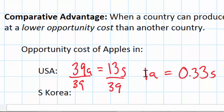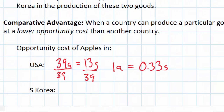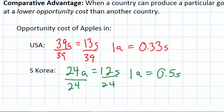Now let's calculate the opportunity cost of apples in South Korea. If South Korea allocates all of its resources towards apple production it can produce 24 apples, but to do so it gives up 12 smartphones: 24a = 12s. Dividing both sides by 24, one apple in South Korea has an opportunity cost of 0.5 smartphones. Comparing this to the lower opportunity cost in the United States, we can see clearly that the United States has a comparative advantage in the production of apples.